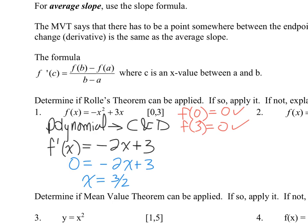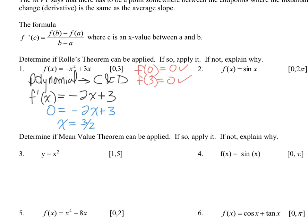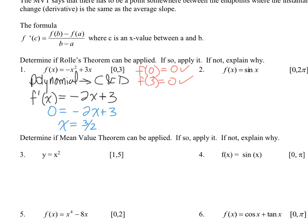Let's hop down to number three, take a look at a mean value theorem question. It's polynomial so it's continuous and differentiable, same deal as before. I need the average rate, so that's going to be f of five minus f of one over five minus one, so change of y over change of x. That's going to be 25 minus one over four, so six.